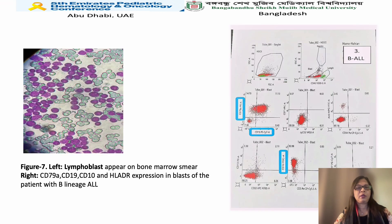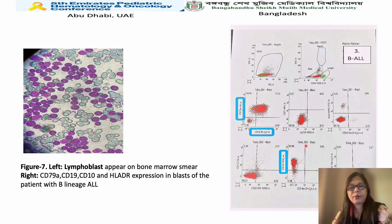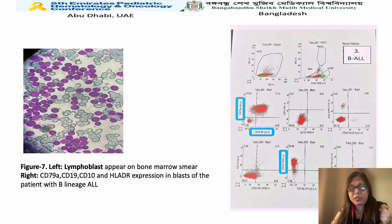This figure also shows lymphoblasts on bone marrow morphological examination, and the immunophenotyping pattern shows CD79a, CD19, CD10 positive and also HLA-DR positive — this immunophenotyping report together with the morphological report corresponds to B-lymphoblastic leukemia.